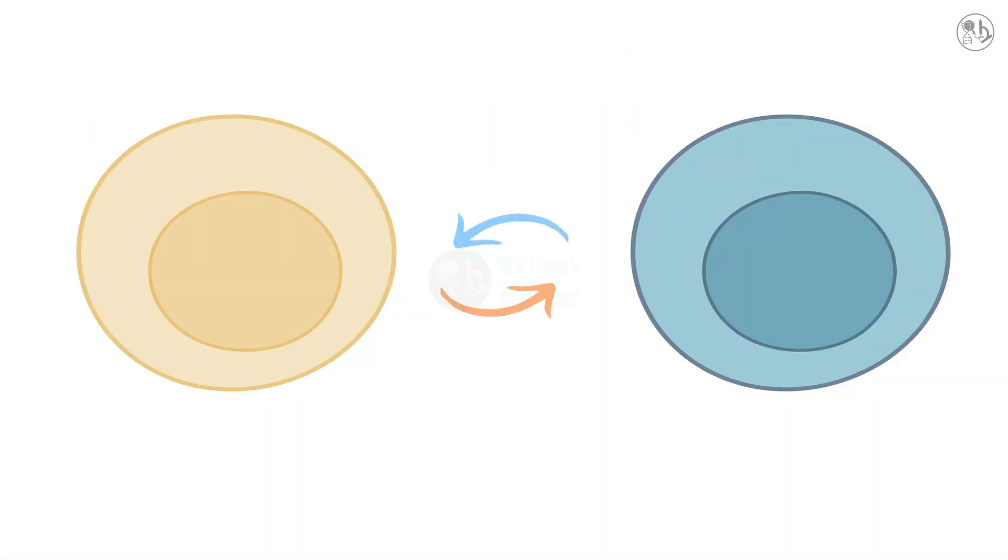How do cells communicate with each other and respond to different signals? One way is by using molecules called second messengers, which relay the signal from the cell surface to the inside of the cell.